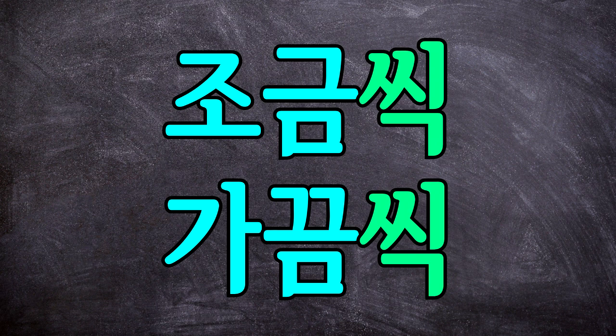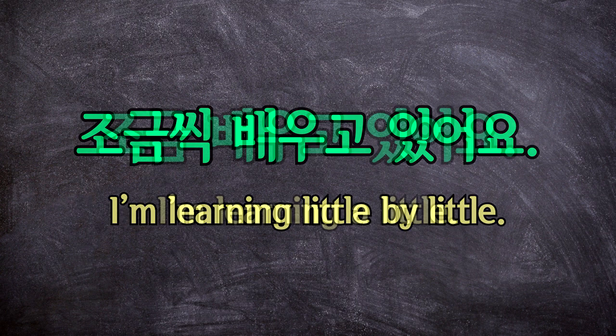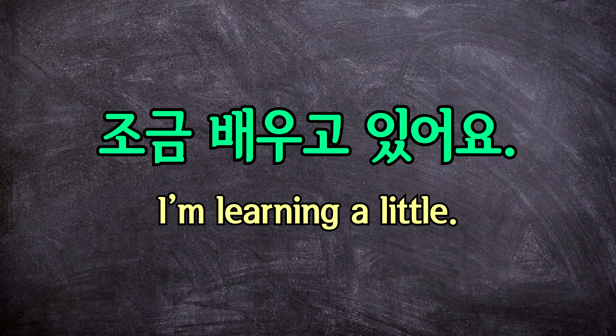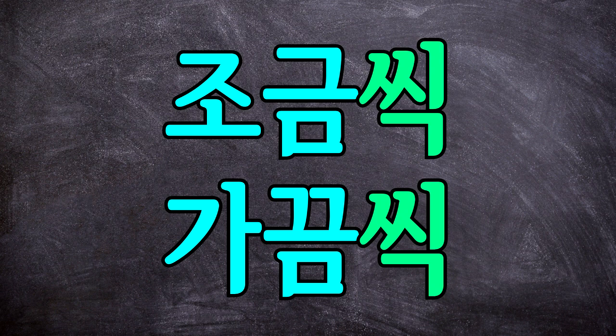You might also see 씩 attached onto certain adverbs like 조금 or 가끔. This adds more emphasis to these words, kind of like attaching the feeling of 'each' to their meaning. So while 조금 means 'a little,' 조금씩 means 'little by little' or 'gradually.' For example: 조금씩 배우고 있어요 — 'I'm learning little by little.' Versus without it: 조금 배우고 있어요 — 'I'm learning a little.' And 가끔 means 'sometimes,' while 가끔씩 means 'sometimes, but not often.' For example: 영화는 가끔씩 봐요 — 'I watch movies sometimes.' You can simply memorize those two separately.